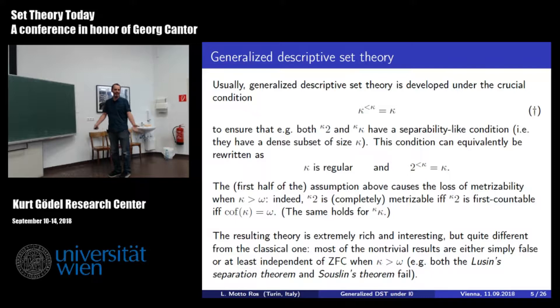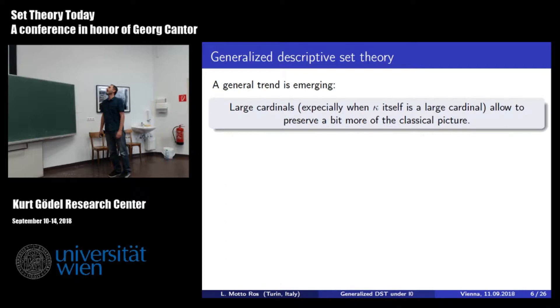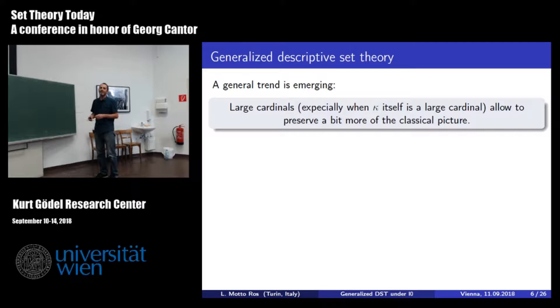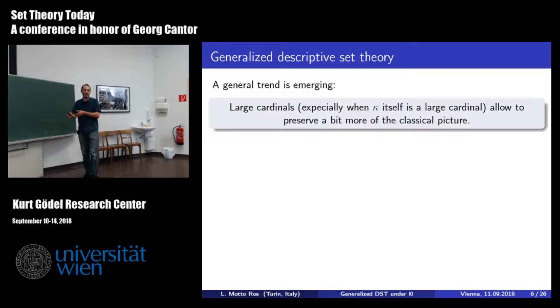At least for people working in classical descriptive set theory, this looks like you are moving to another subject. However, there is a general trend emerging in recent years with many results in this area. The trend—at least my view—is that large cardinals usually help you in getting closer to the original picture, either through the presence of large cardinals or by working with kappa being a certain large cardinal.